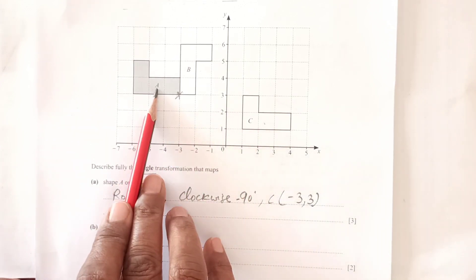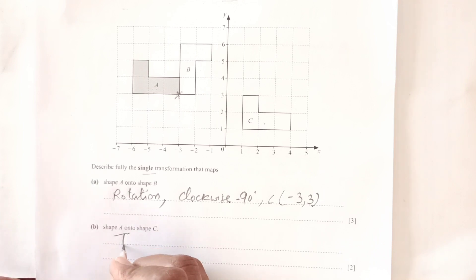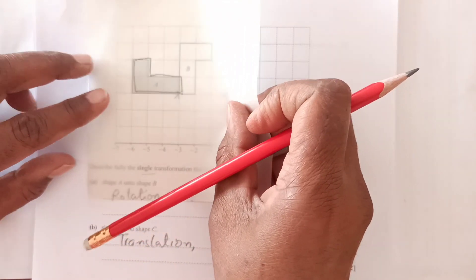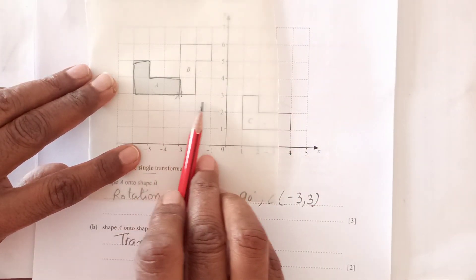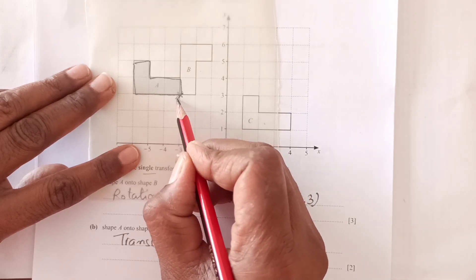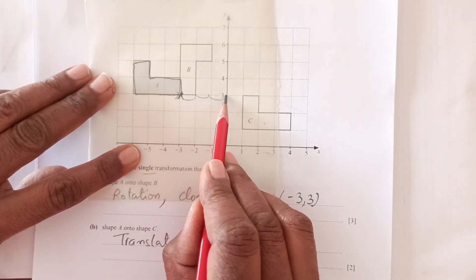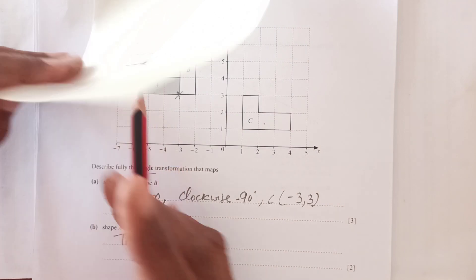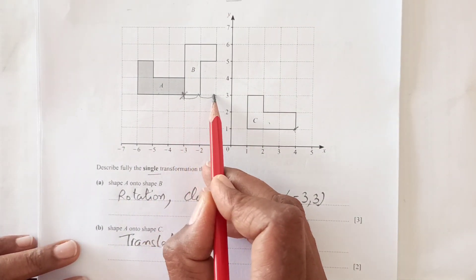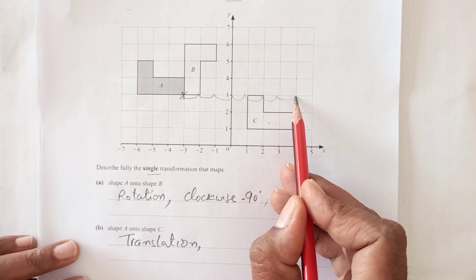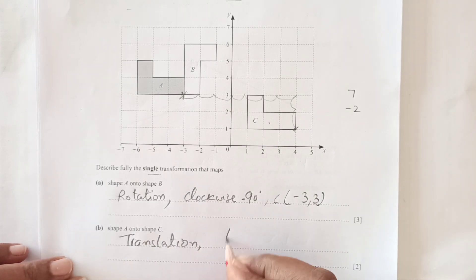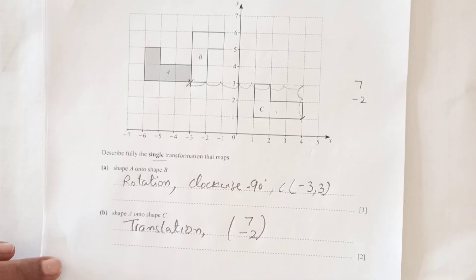Shape A onto shape C: This is a movement, so it's a translation. Placing the tracing paper, the shape moves right 7 points (1, 2, 3, 4, 5, 6, 7) and down 2 points. So it's a translation with vector (7, -2).